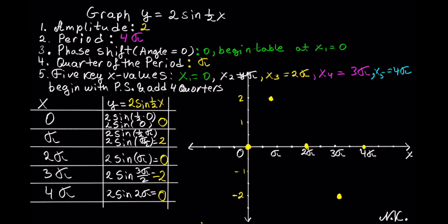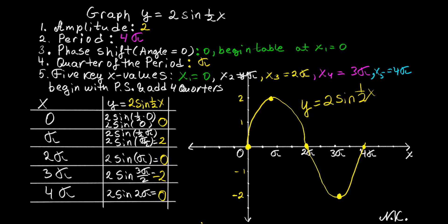Once we have all 5 points plotted, we can connect the graph with a curve. This is our y equals 2 sin of 1 half of x graph. That's all!